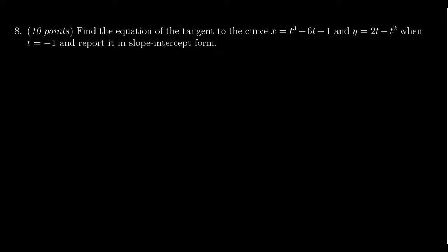In this video, we provide the solution to question number eight for practice exam number three for Math 1220, in which case we have to find the equation of the tangent line given by the parametric curve x equals t cubed plus 6t plus 1 and y equals 2t minus t squared at the point where t equals negative 1.